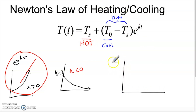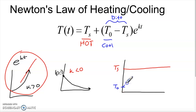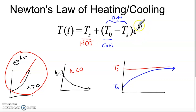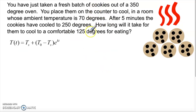If we graph this, the surrounding temperature is up here — that's our oven temperature. We start down at our cool cookie temperature. As time goes on, the cookies warm up toward the oven temperature and we get this asymptotic behavior, because e^(kt) gradually crunches to zero, killing the difference term, so the function just becomes T sub s — the surrounding temperature.